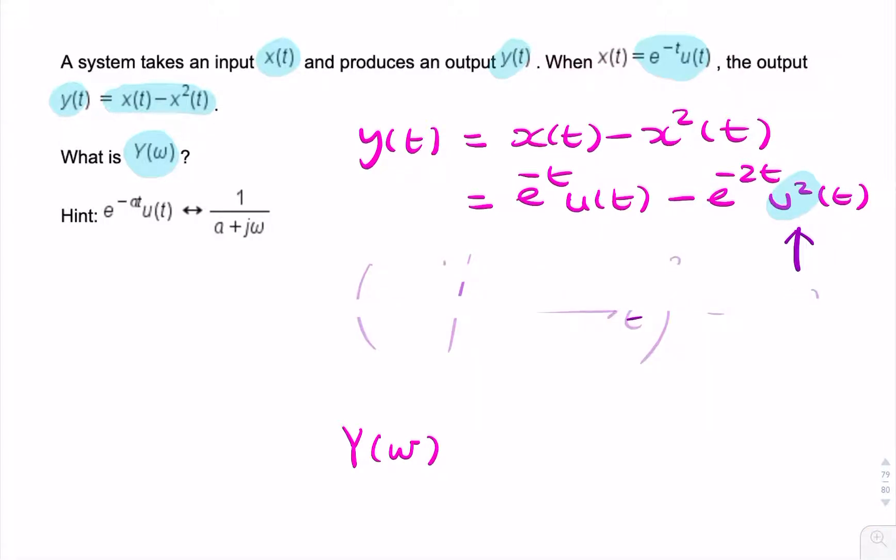So we can simply rewrite this as e^(-t)u(t) - e^(-2t)u(t).